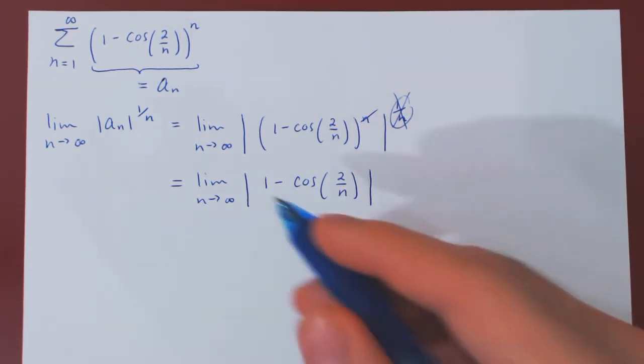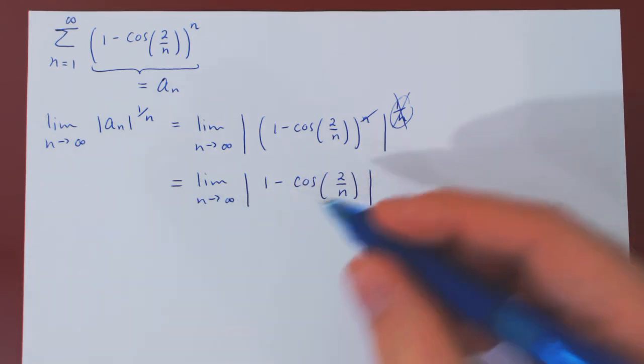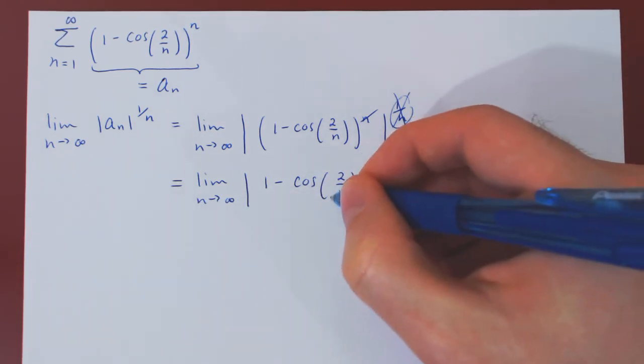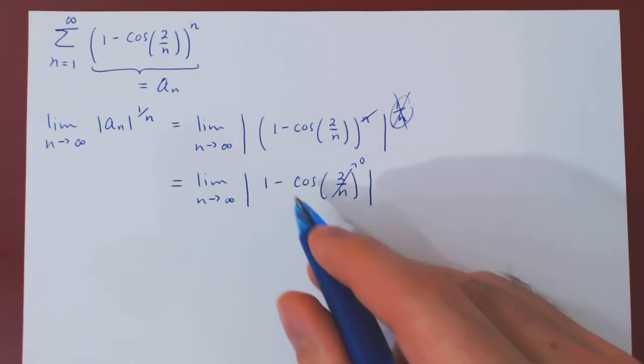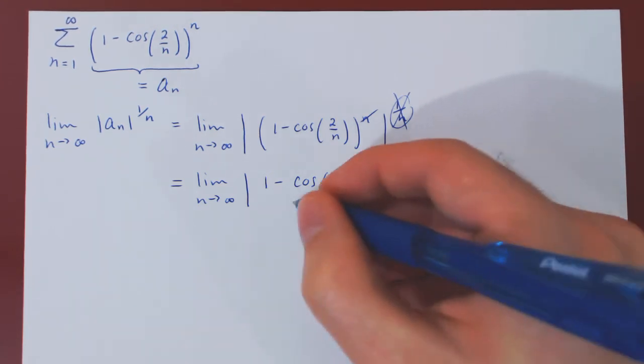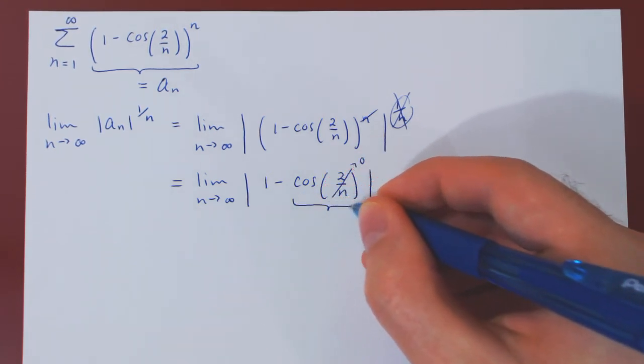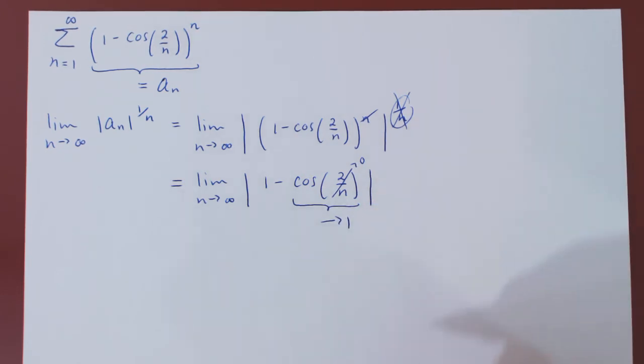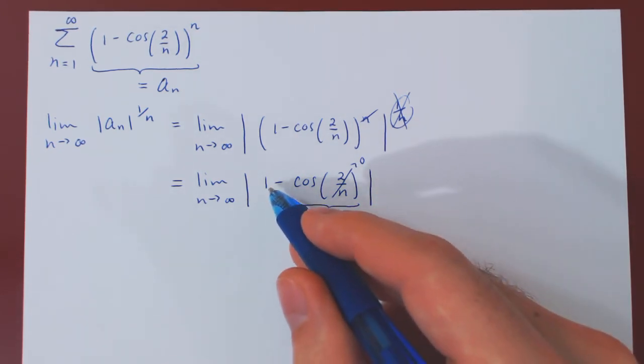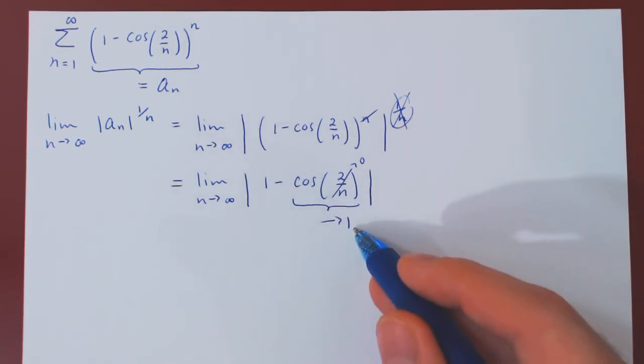And this is a very simple limit. As n tends to infinity, 2/n tends to 0. But cos(0) is 1, so this will be approaching 1. 1 minus 1, which is 0.